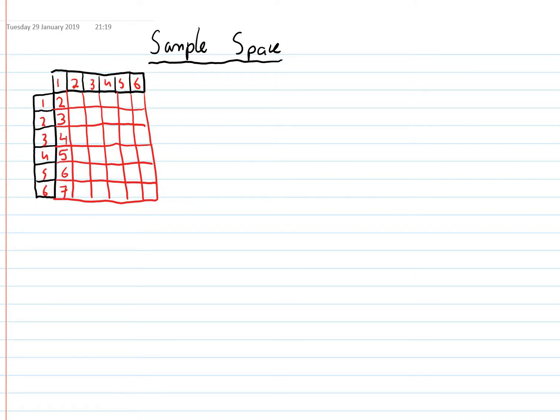Sometimes it's useful to use a sample space diagram when we're asked questions that might be a little bit tricky to do in our head. For instance, let's say I have two dice and I'm asked: if I roll the two dice at the same time, what's the chances of getting a combined total of an odd number? That's a lot of numbers to deal with, so what I can do is draw a sample space diagram.